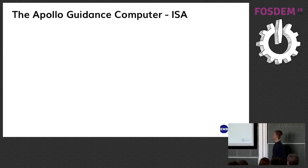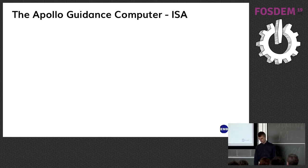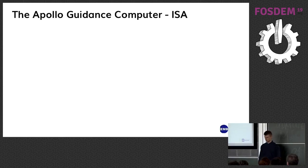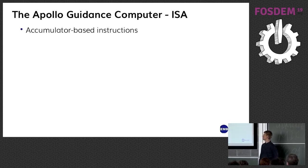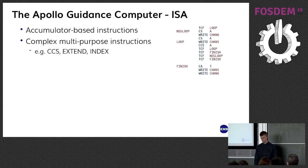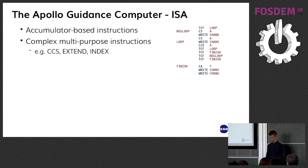The instruction set architecture of the AGC is quite a different architecture to what we're used to, due to the lack of computing resources, and also the assembly was designed for programmers and not compilers. Firstly, instructions are accumulator-based. Secondly, many instructions have a very complex operation to squeeze in some sort of higher-level constructs into such a small ISA.